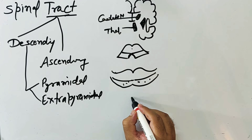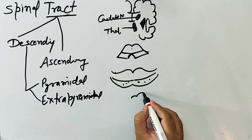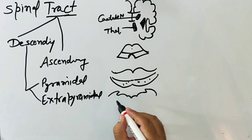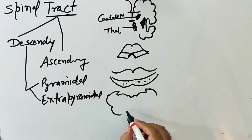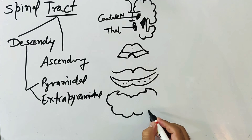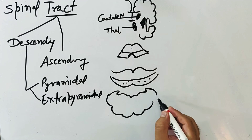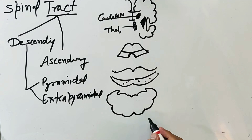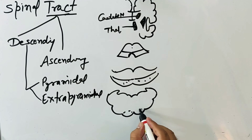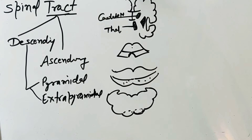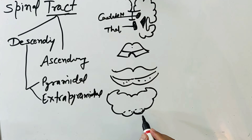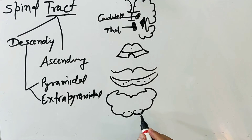Here is the medulla oblongata. This part is the pyramid. Descending fibers that pass through this pyramid are known as pyramidal fibers, and the tract is known as the pyramidal tract.